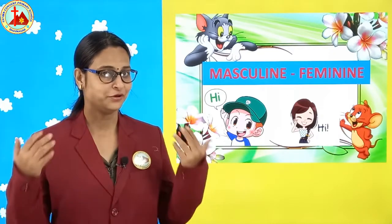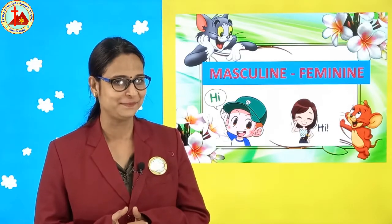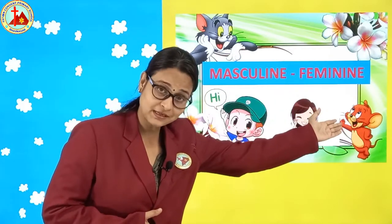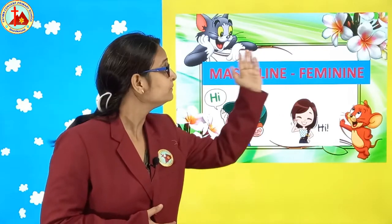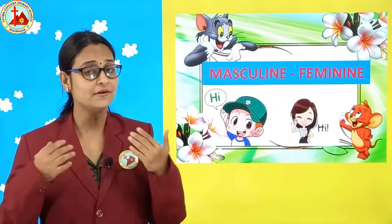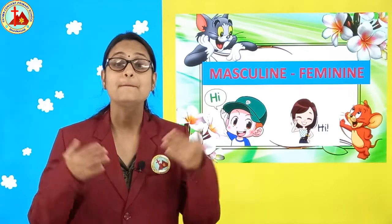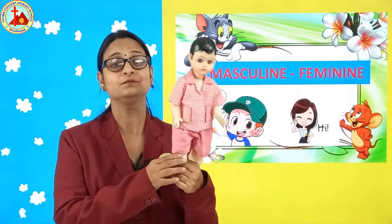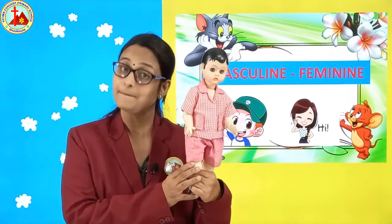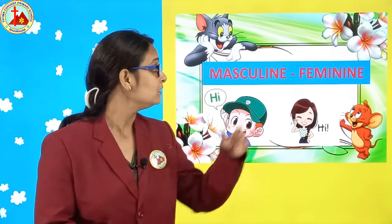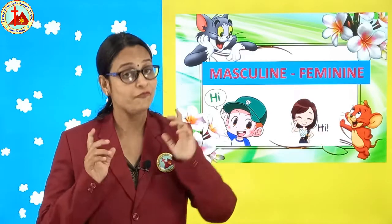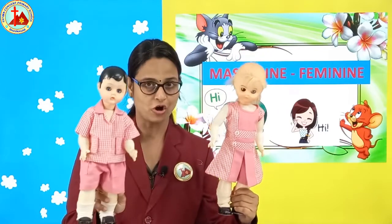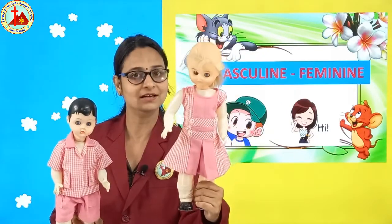So children, today I am here with a very interesting and new topic. What is written here? Masculine, feminine. So children, first let me explain. What is masculine? Masculine means male gender. For example, boy. Boy is masculine. Then feminine — feminine means female gender. Girl. Boy is masculine, girl is feminine.